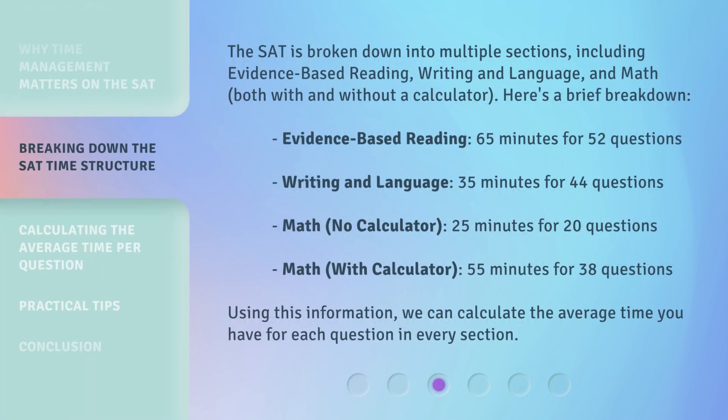The SAT is broken down into multiple sections, including evidence-based reading, writing and language, and math, both with and without a calculator. Here's a brief breakdown: Evidence-based reading — 65 minutes for 52 questions. Writing and language — 35 minutes for 44 questions. Math, no calculator — 25 minutes for 20 questions. Math, with calculator — 55 minutes for 38 questions.